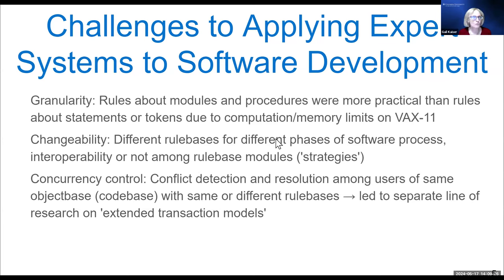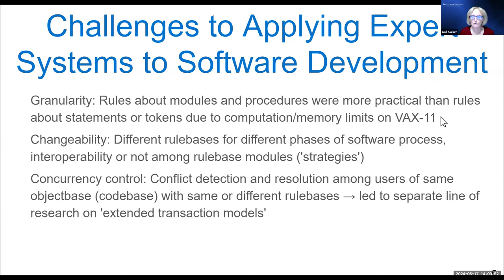We considered the granularity of applying AI to software development. Today, you know about AI applying things at the level of tokens. That was not practical on the equipment we had — VAX 11s, 780s, and 750s, which are about as intelligent as your chair in terms of memory and computation. So basically, we had rules about modules and procedures, not at the statement or token level. We also wanted rule bases that could change over time, which was not a common thing in expert systems at that point.